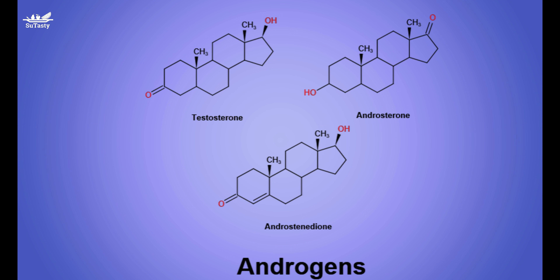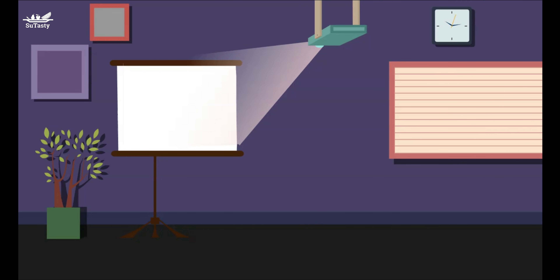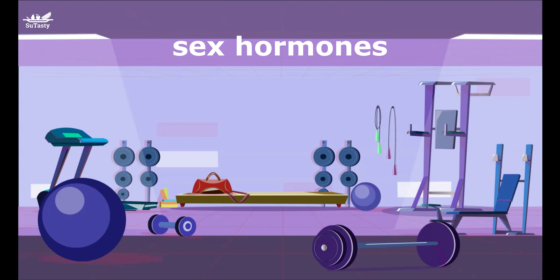The male hormones are testosterone, androsterone, and androstenedione. The two most important male sex hormones are testosterone and androsterone. The male sex hormones are also called androgens. Male sex hormones are responsible for developing male secondary sex characteristics during puberty and for promoting tissue and muscle growth.